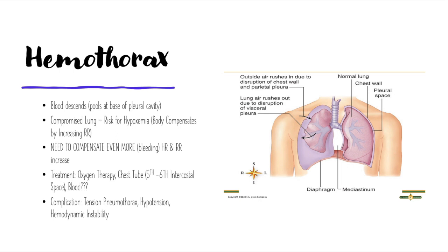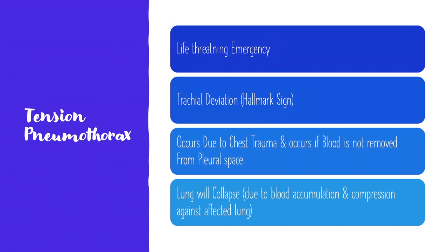If a hemothorax is not corrected promptly, the complication that can arise is a tension pneumothorax, which is a medical emergency. Its hallmark sign is tracheal deviation — the trachea is displaced and pushed toward the unaffected side of the body. For example, if there is a tension pneumothorax to the left lung and blood accumulates extensively, it will push the trachea to the right side of the body.